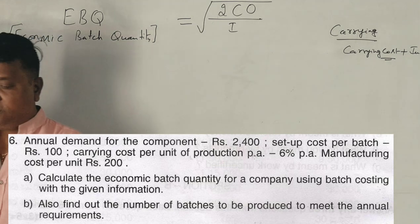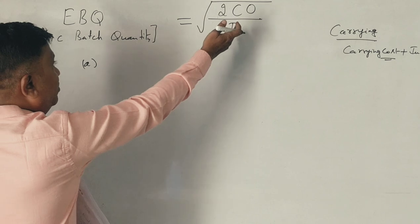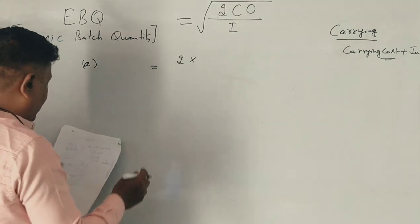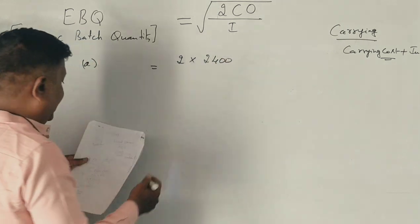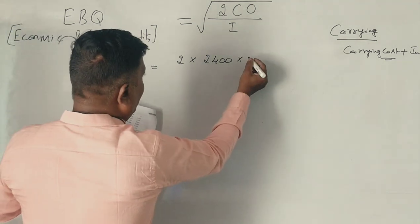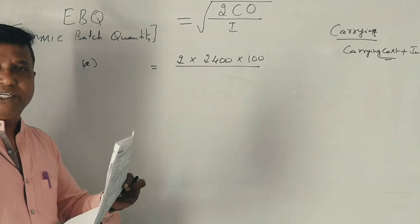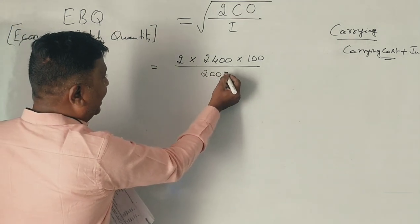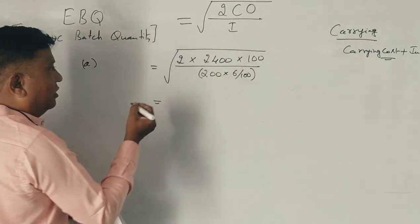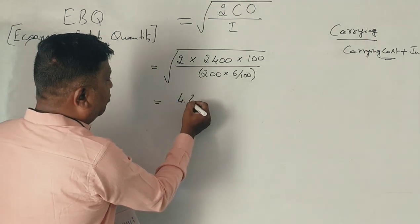The formula is EBQ = √(2CO / H). Annual demand C is 2,400. Setup cost per batch O is 100. So the numerator is 2 × 2,400 × 100 = 4,80,000. Manufacturing cost per unit is 200, and carrying cost is 6%, so H = 200 × 6% = 12 rupees.